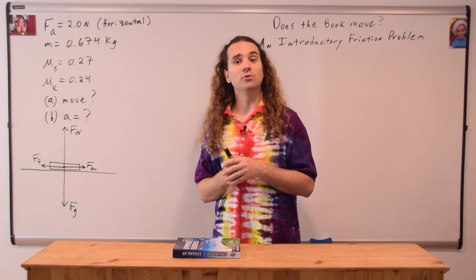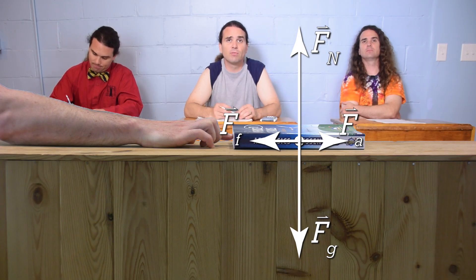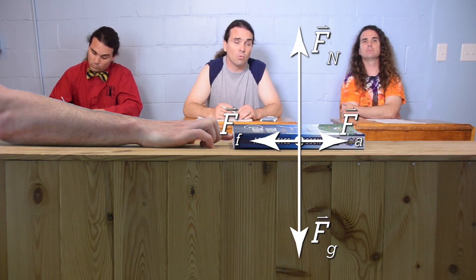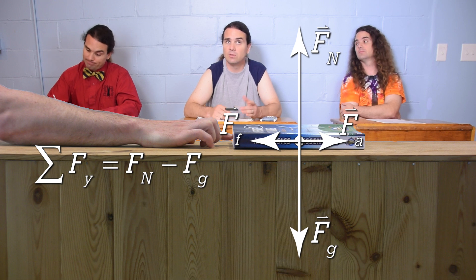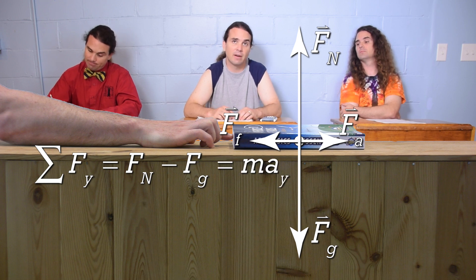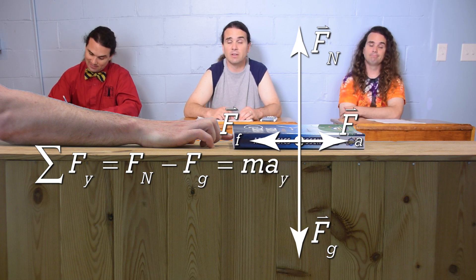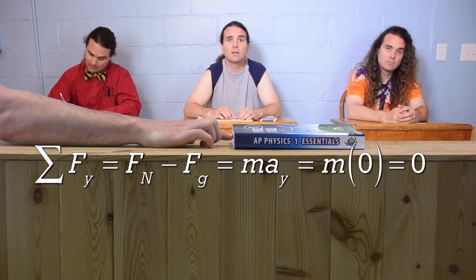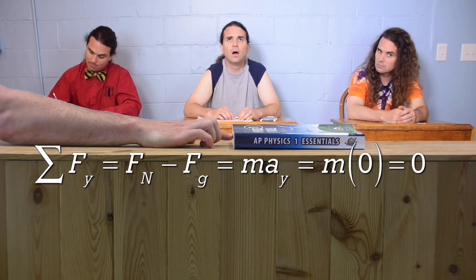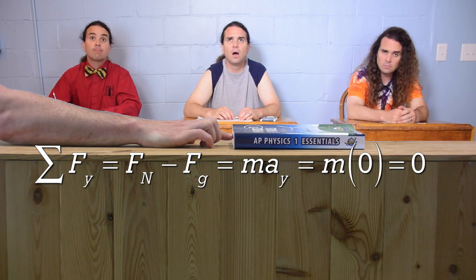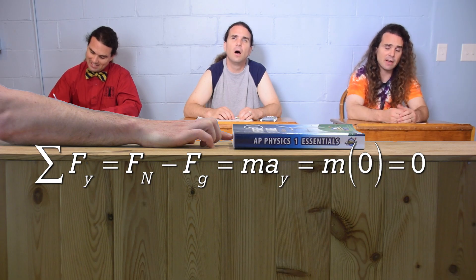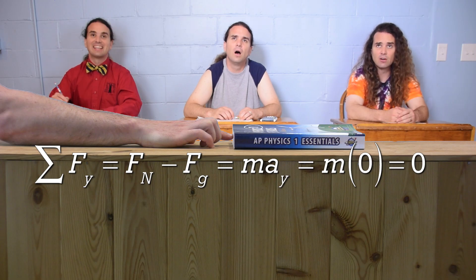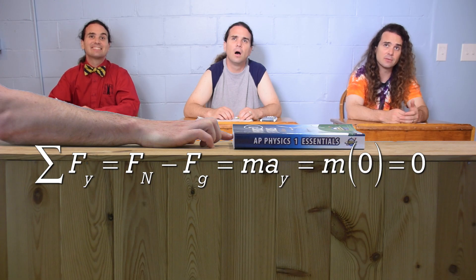Bobby, could you please do step four? Step four, sum the forces. Let's sum the forces in the y direction. The net force in the y direction equals the force normal minus the force of gravity, which then equals mass times acceleration in the y direction. We know the acceleration in the y direction equals zero — because if the book moves, it will move in the x direction and not the y direction. Therefore, the acceleration in the y direction will be zero.